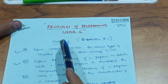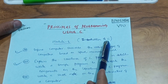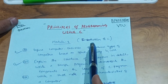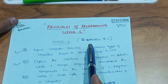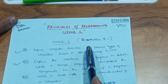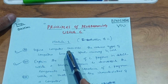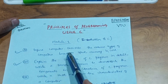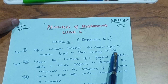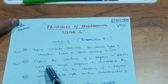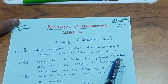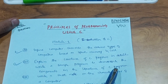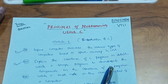Module 1 is an introduction to C. It is a theoretical chapter — a passing module — and you have to cover some theory from it. I've picked some important questions to focus on. First: define computer and describe the various types of computers based on speed, memory, and cost. Next: explain the structure of a C program in detail and write a sample program to demonstrate the components in the structure of a C program.